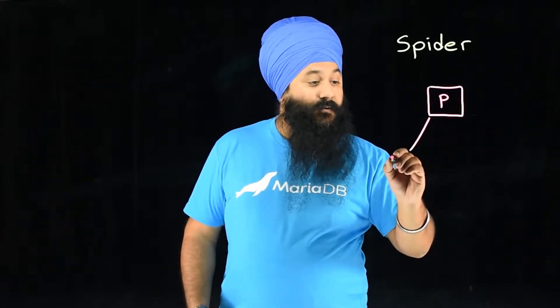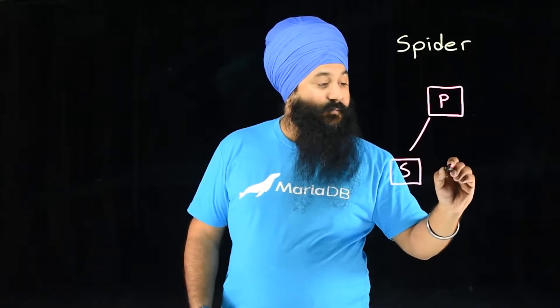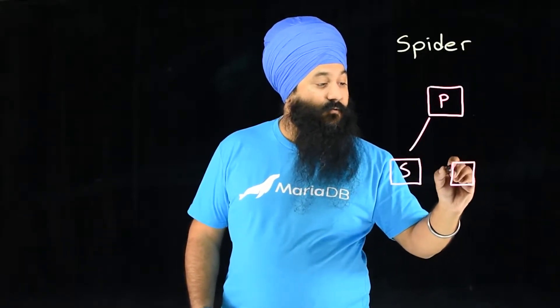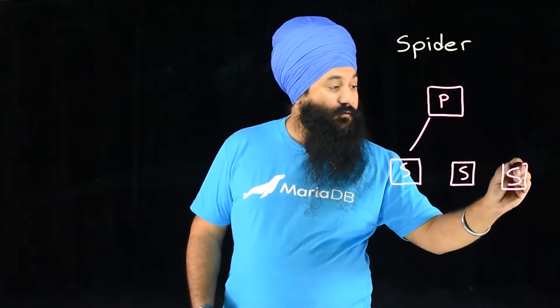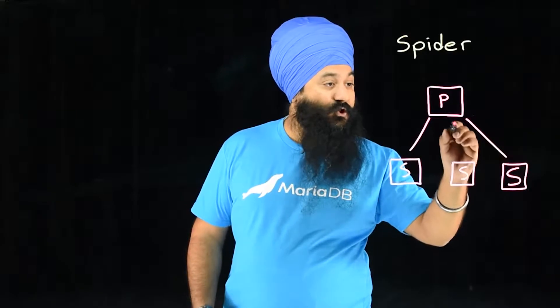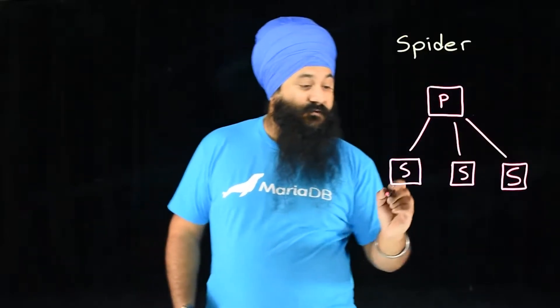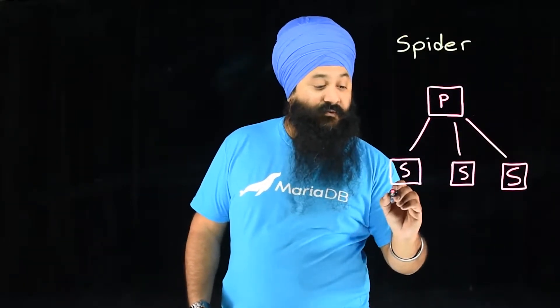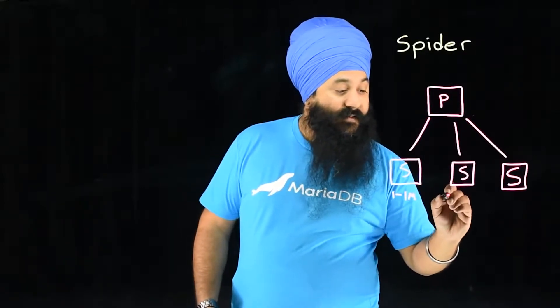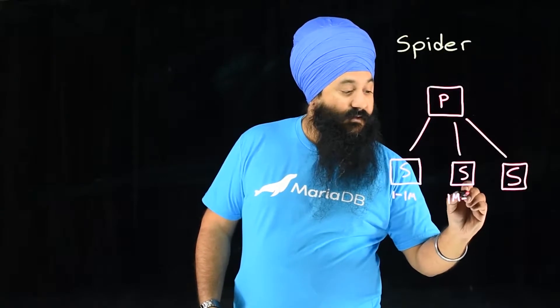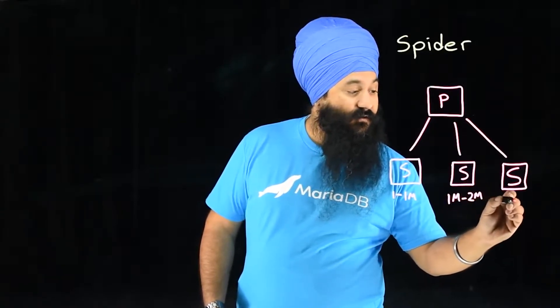With Spyder, what we can do is have our primary data node talk to many Spyder shards underneath, where each partition lives on its own MariaDB node. So this means you could partition or shard across servers. In this case, you could do it by range, for example, where IDs one through one million are on one shard, and then one million through two million are on another shard, and so on.